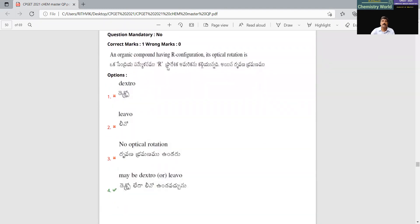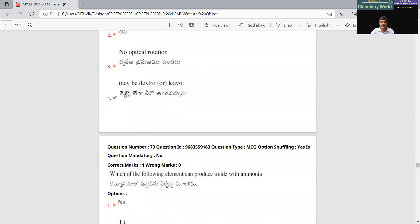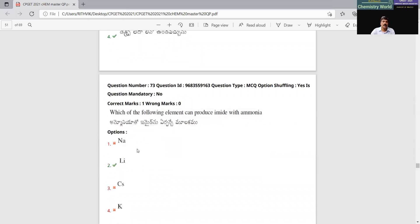Naturally, the absolute configuration is nothing to do with the rotation. The specific rotation is experimental value. The absolute configuration is assigned based on the relative orientation of the groups. Therefore, it could be levo or it could be dextro. You cannot correlate, actually. The configuration could not be correlated with the optical rotation.